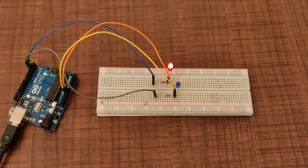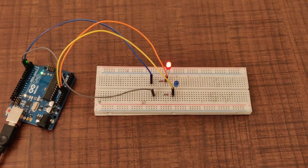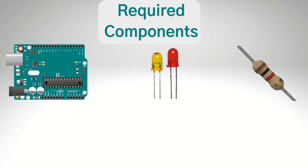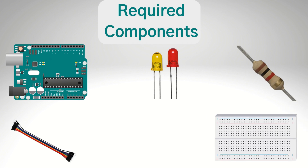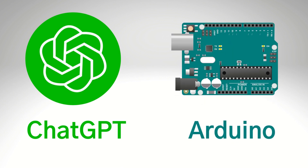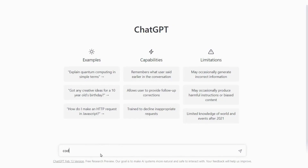Now we will blink 2 LEDs using Arduino and ChatGPT. Required components are Arduino Uno, 2 LEDs, a 220 ohm resistor, jumper wires, and a breadboard. We will generate code by using ChatGPT and run it into Arduino IDE. Open ChatGPT from chat.openai.com and type: code to blink 2 LEDs using Arduino.